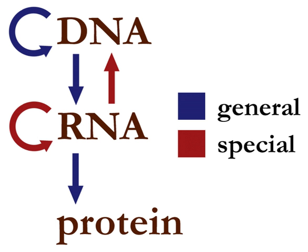Reverse transcription is the transfer of information from RNA to DNA. This is known to occur in the case of retroviruses, such as HIV, as well as in eukaryotes in the case of retrotransposons and telomere synthesis. It is the process by which genetic information from RNA gets transcribed into new DNA.